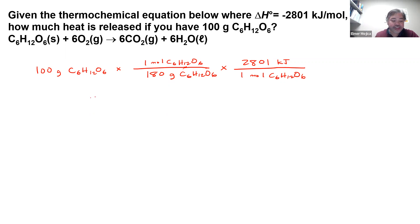So if you're going to solve this problem, you have 100 divided by 180 times 2,801. The amount of energy that is released is around 1,556 kilojoules. So that's the answer, amount of energy that is released.